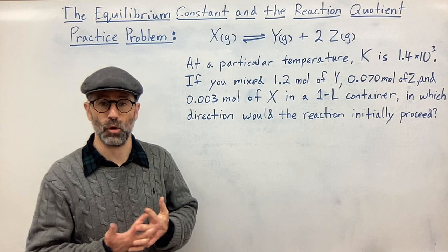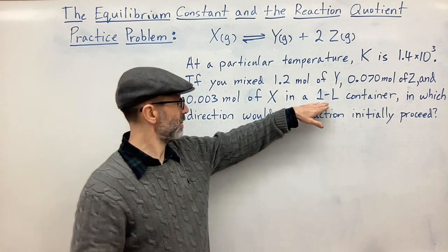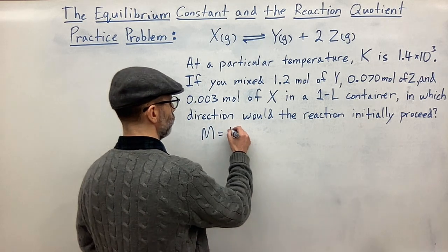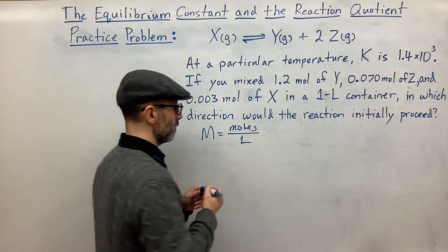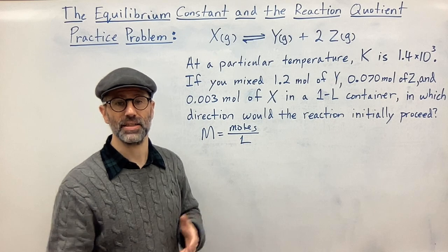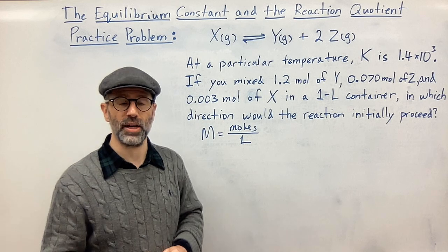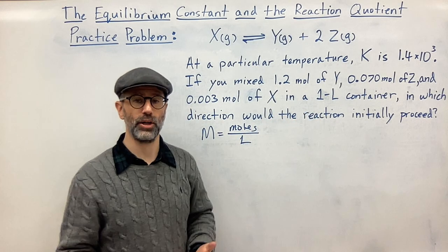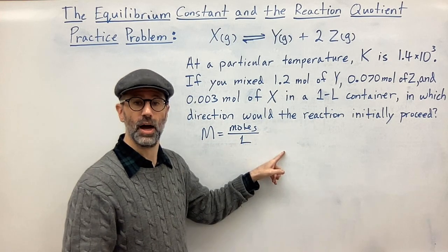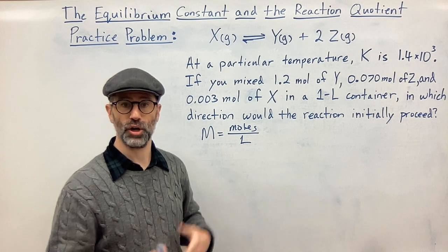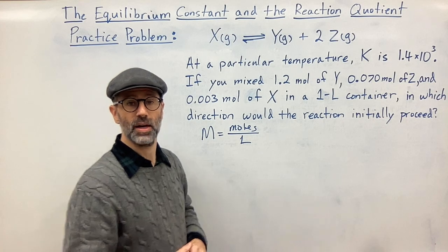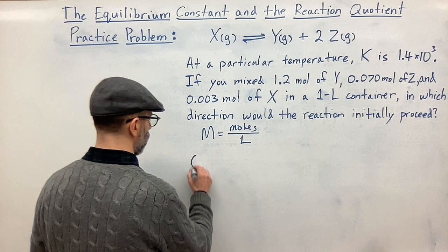The first thing to notice is they gave us moles, not molarity, but they told us it's in a one-liter container. Remember, molarity equals moles over liters. So in a one-liter container, the number of moles equals the molarity. If it were a two-liter container, you'd divide each mole value by the number of liters to get molarity first, then plug into your Q expression.